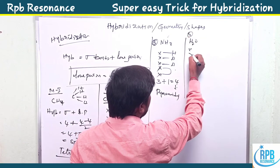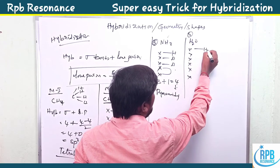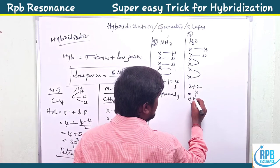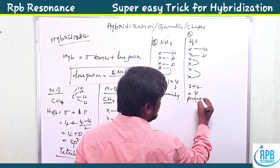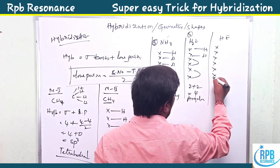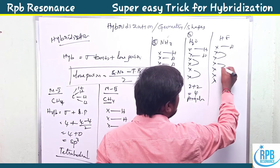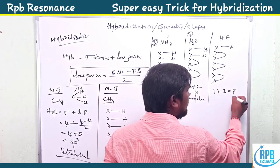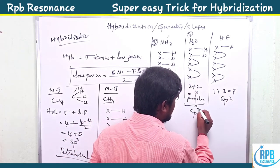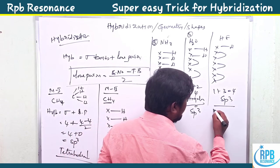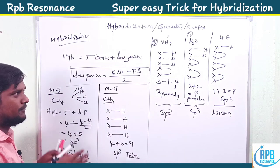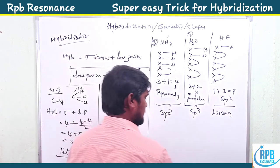For water, oxygen's group number is six. Two hydrogens are bonded; the remaining four electrons form two lone pairs. Two plus two equals four — sp3 hybridization, but the shape is angular or bent. For HF, fluorine's group number is seven; one hydrogen plus three lone pairs gives one plus three equals four — sp3 hybridization, but the shape of the molecule is linear.